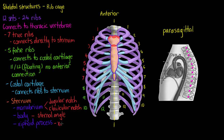The last structure or connection point on the sternum is the xipho sternal joint — where the body and the xiphoid process meet here. As mentioned, the xiphoid process is usually cartilage in early life and ossifies later in life, forming a synostosis, meaning a bony joint. I've also highlighted this parasagittal view of the sternum in orange for reference.